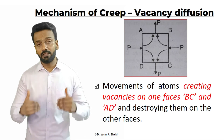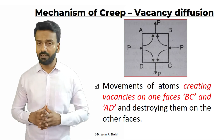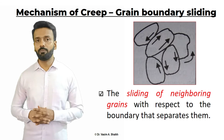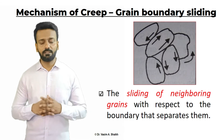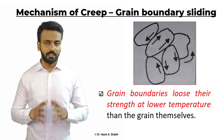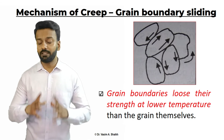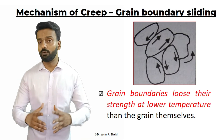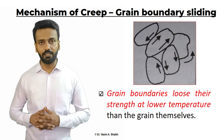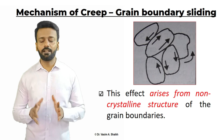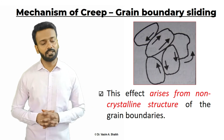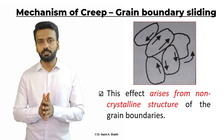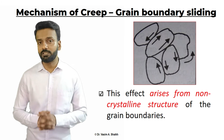The third mechanism of creep is grain boundary sliding — the sliding of neighboring grains with respect to the boundary that separates them. Grain boundaries will lose their strength at a relatively lower temperature than the entire grain because a lot of energy is concentrated at the grain boundary. The main reason behind this is that at the grain boundary there is no defined crystalline structure, whereas inside the grain there is a well-defined structure. So the grain boundary will lose its strength even at a lower temperature than the entire grain.